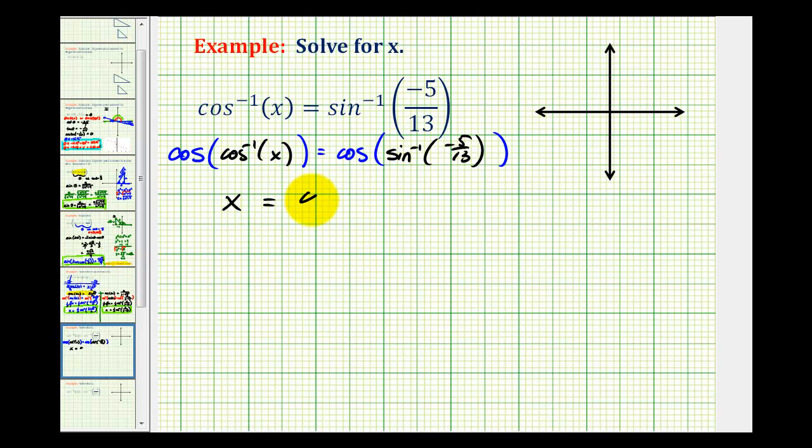On the right side, we have just cos(sin⁻¹(-5/13)).